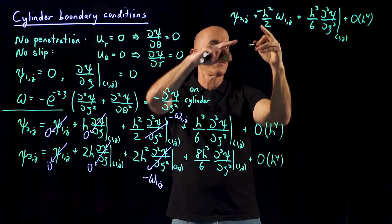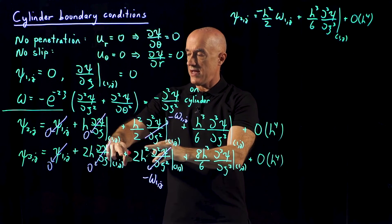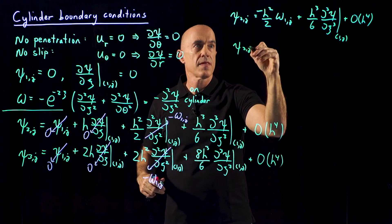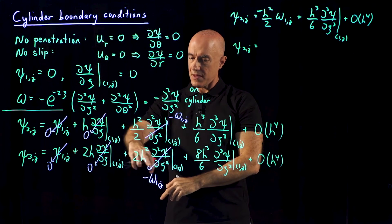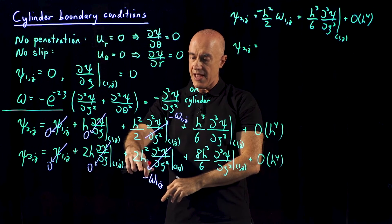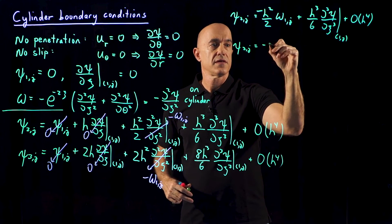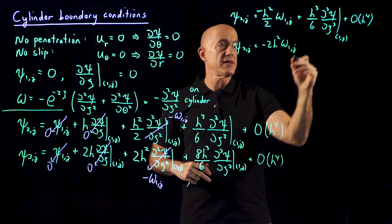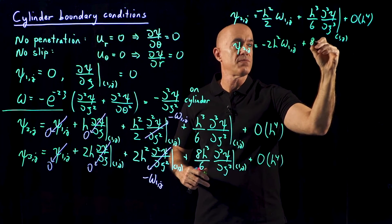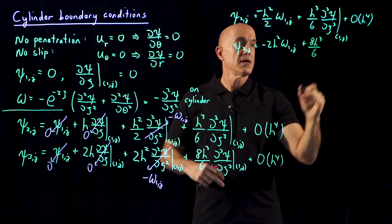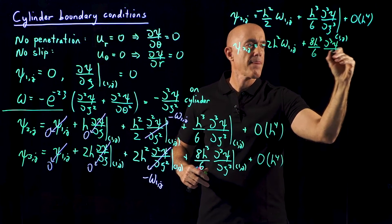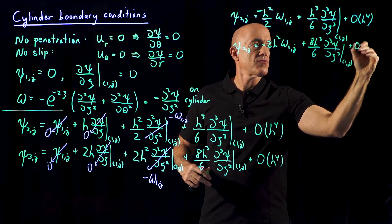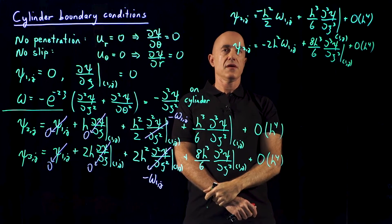The second Taylor series expansion, two grid points away from the cylinder, reduces to: psi 3j = −2h² · ω_{1j} + (8h³/6)(third derivative at 1j) + O(h⁴). So we now have two equations relating the stream function values one and two grid points from the cylinder to the vorticity on the cylinder, with a cubic h term we wish to eliminate.